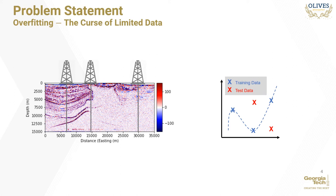Learning-based seismic inversion suffers the problem of overfitting because of the limited availability of well-logged data. This is a direct consequence of the fact that wells are expensive to drill — a single well may cost up to millions of dollars. Machine learning models commonly trained for inversion tasks may contain thousands to hundreds of thousands of free parameters. Over-parameterized machine learning models trained on seismic surveys with limited well data memorize the training set while doing poorly on unseen test samples.